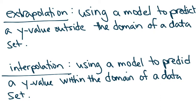So when we have these models, there are two types of information we often are looking for. Sometimes we want to do something called extrapolation. Extrapolation is when you're using a model to predict a y value that's outside of the domain of a data set. Remember, domain are your inputs. So if you're trying to find a value that doesn't lie within your x values, we call it extrapolation.